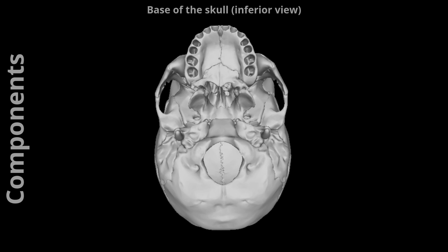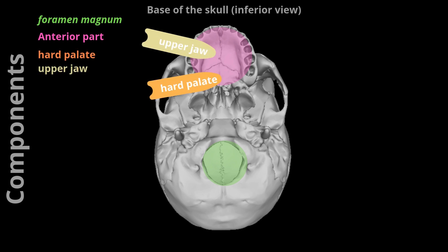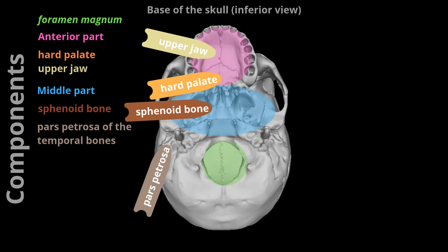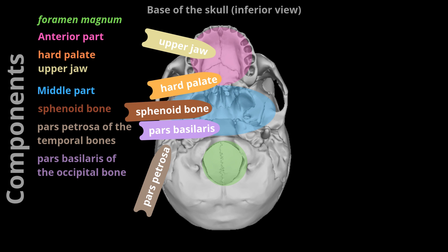Base of the skull, inferior view: The base of the skull extends from the superior nuchal lines of the occipital bones posteriorly to the upper incisors' teeth anteriorly. This aspect of the skull contains a lot of important structures, including the largest skull foramen, the foramen magnum. We can divide this part of the skull into five regions to make it easier to study: the anterior part (hard palate and upper jaw), the middle part (sphenoid bone, petrous processes of the temporal bones, and the basilar part of the occipital bone), and the lateral parts.